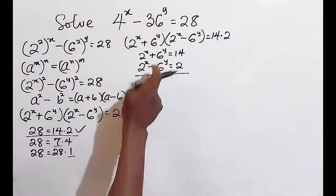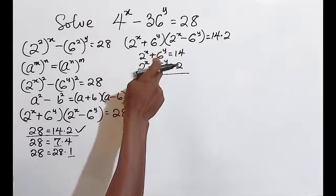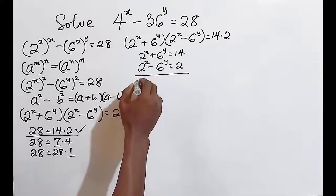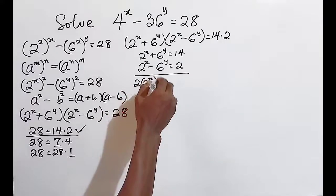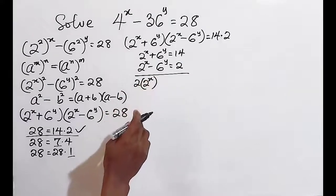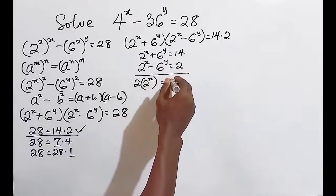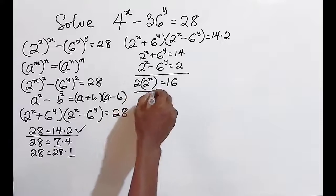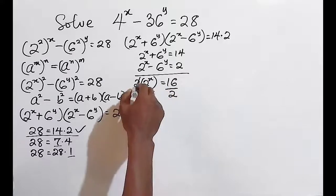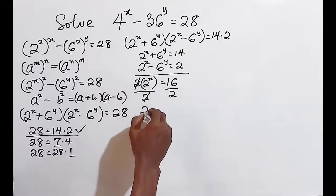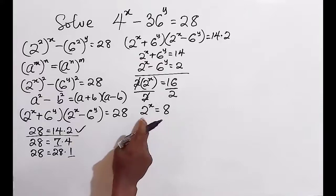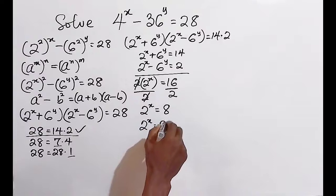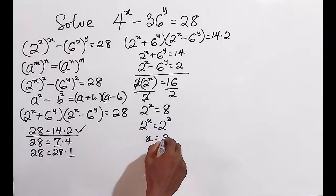Adding the two equations, we get 2 × 2^x = 16. Dividing both sides by 2, we have 2^x = 8. Reducing to base 2, this gives us 2^x = 2³, so x = 3.